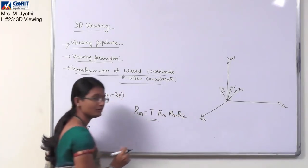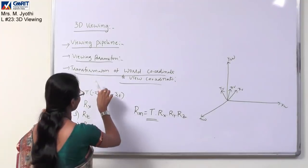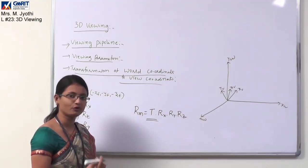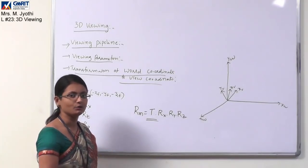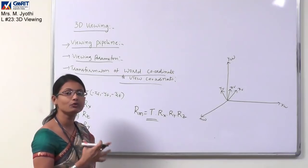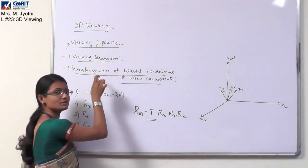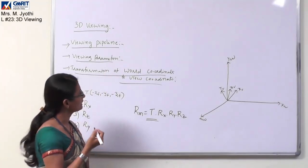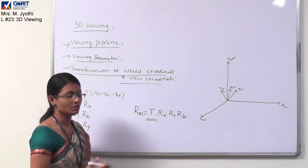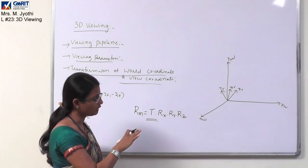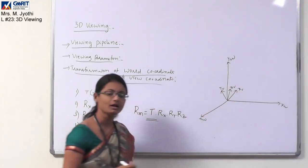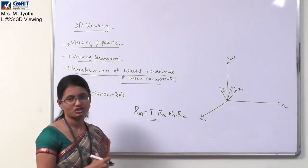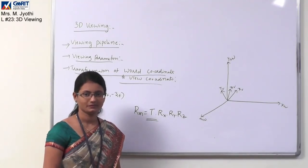This is the final representation for transforming world coordinates to view coordinates. After doing that you can apply any further transformation such as reflection. So this covers the 3D viewing pipeline, viewing parameters, and transformation of world coordinates to viewing coordinates. How three-dimensional objects are projected onto two-dimensional space will be discussed in the projections concept in our next video. Thank you.